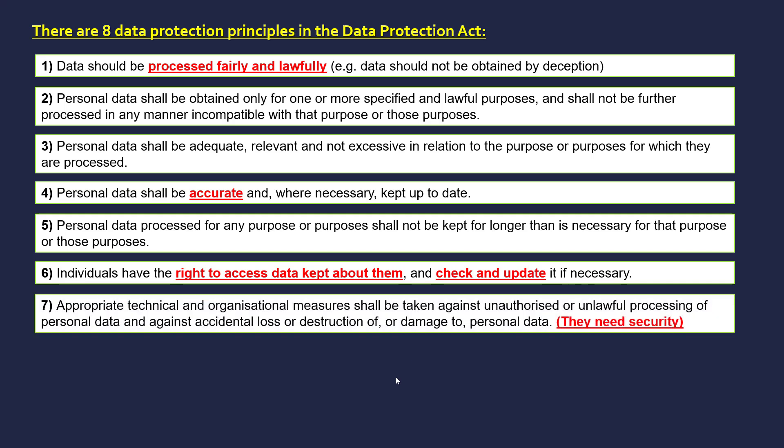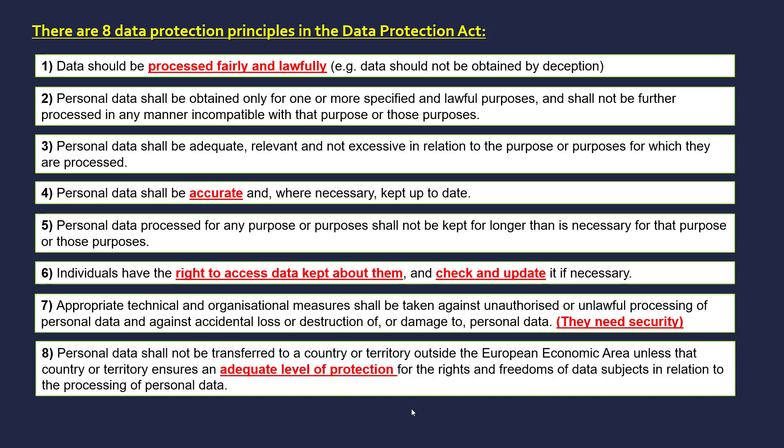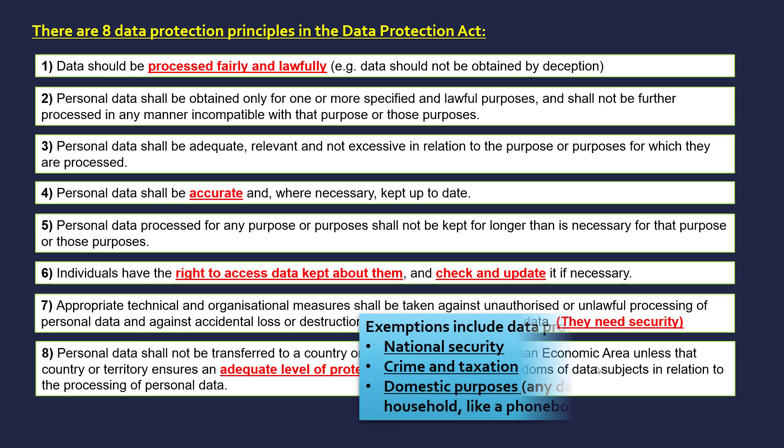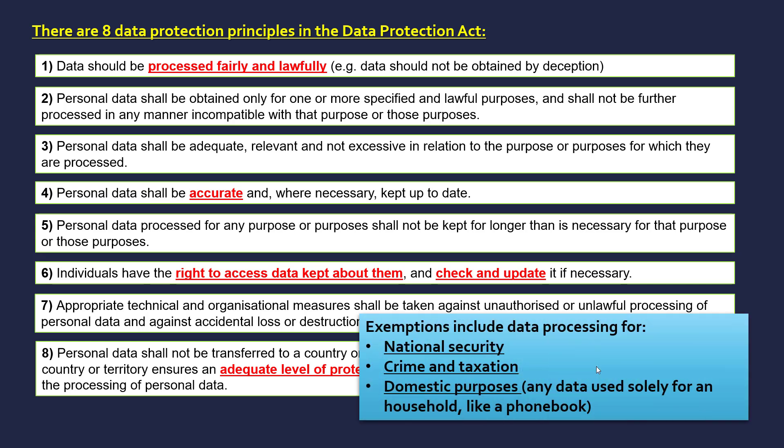The seventh principle is all about the fact that they should protect your data — they shouldn't let it be publicly available, they've got to have good security. The eighth point is that data shouldn't be transferred to anywhere which is less secure than it is now. There are some exemptions — things like national security. GCHQ can collect all the data they want, as can departments working on crime and taxation. Finally, domestic purposes are not covered, so if you're collecting data just about your friends and family, that's fine — you don't have to adhere to all of this.